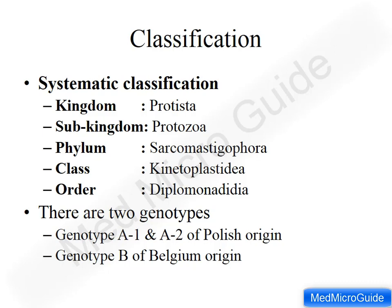We can do the systematic classification of Giardia and place it under kingdom Protista, sub-kingdom Protozoa, phylum Sarcomastigophora, class Kinetoplastida, order Diplomonadidae. Giardia lamblia can be genotyped into two types based on place of origin: genotype A1 and A2 of Polish origin, and genotype B of Belgian origin. This is only of epistemological importance because genotypes are not associated with any virulence or particular predilection for a population.